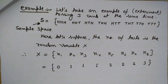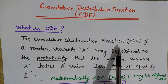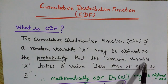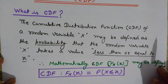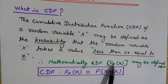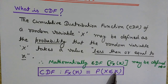Now you can easily understand the cumulative distribution function. The CDF of a random variable X may be defined as the probability that the random variable X takes a value less than or equal to x. Mathematically, we represent this CDF by capital F(X) where the argument is small x — just notice this notation.